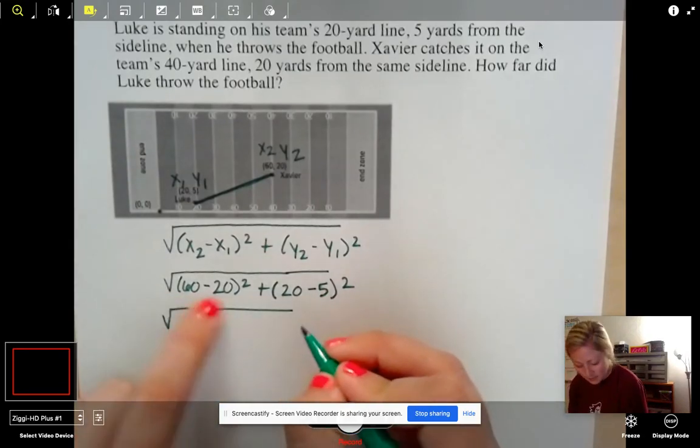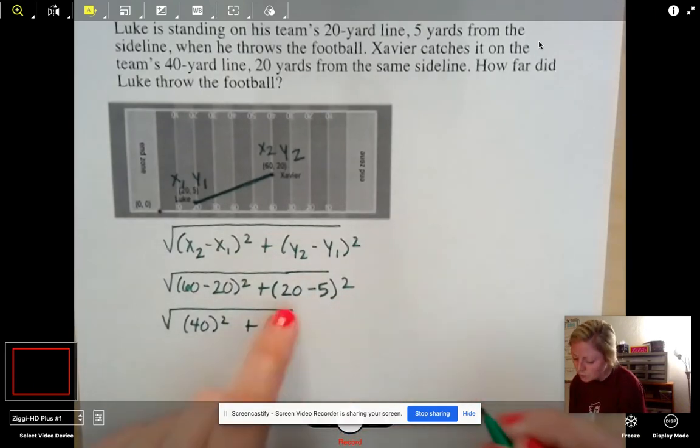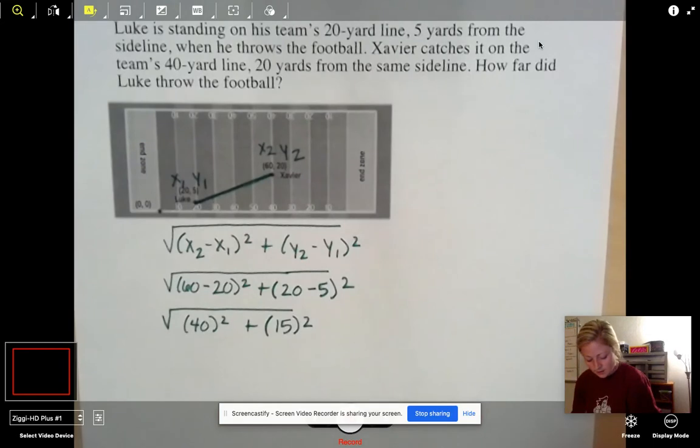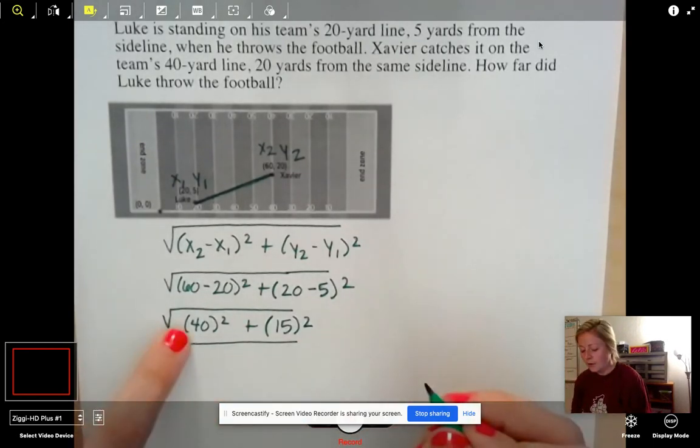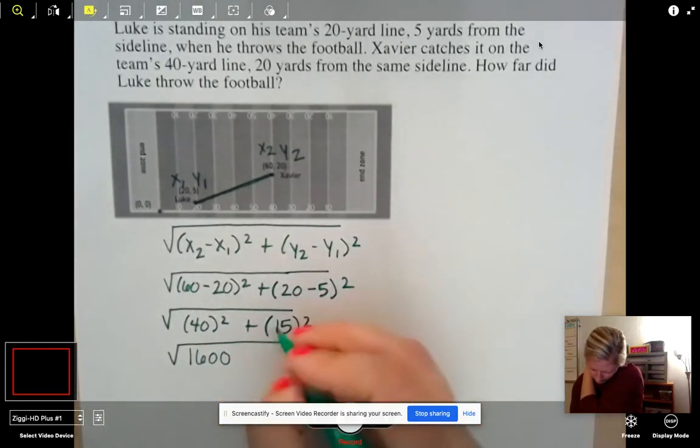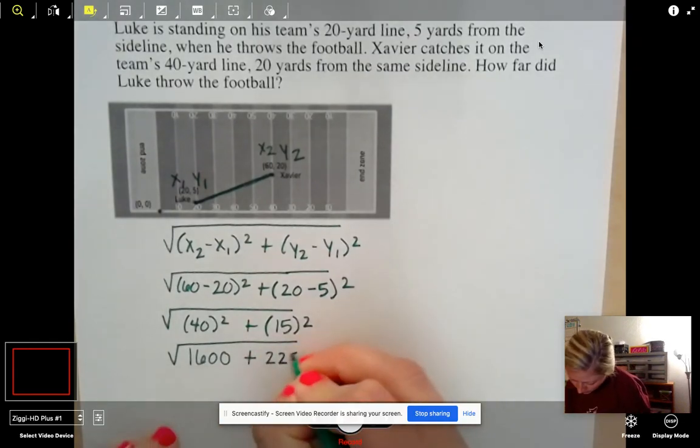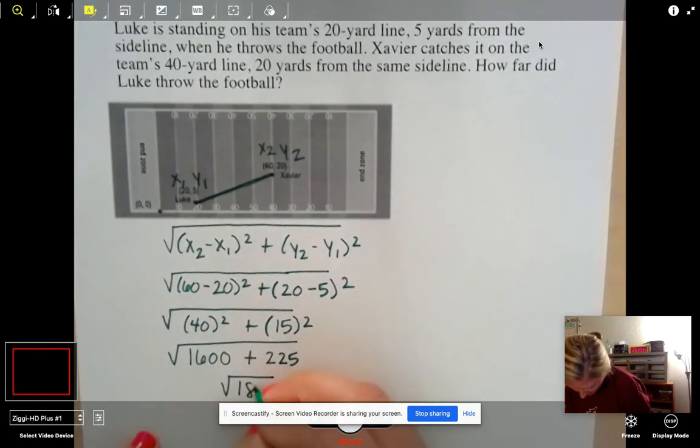60 minus 20 we know is 40. 20 minus 5 is an easy number of 15. And now we crunch it out again. 40 times 40, 1600. 15 times 15 is 225. Add these guys together for a total of 1825.